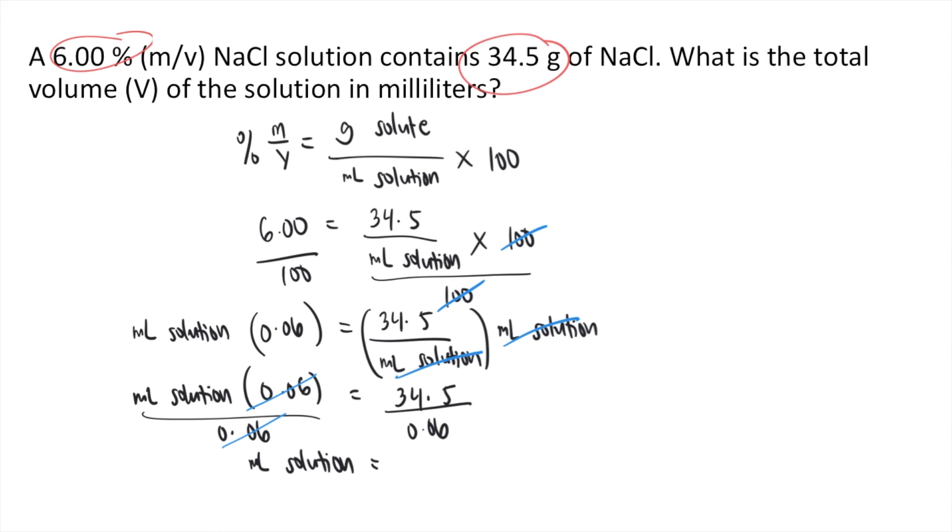On the right side, you have 34.5 divided by 0.06. And that's equal to 575. And that's your mL of solution. So the answer to this question is 575 mL.